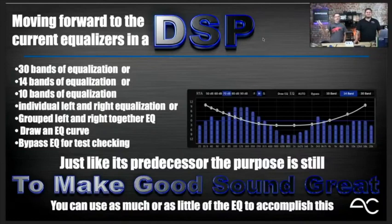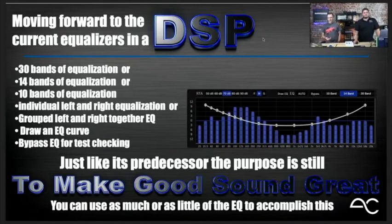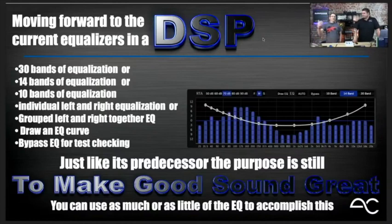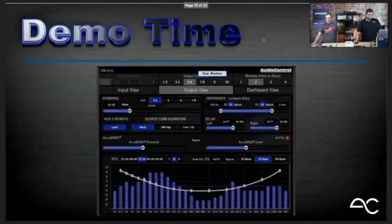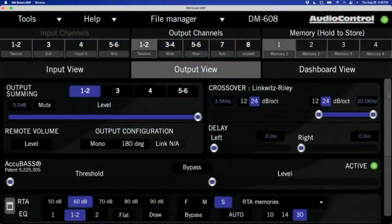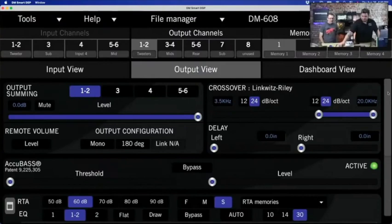You can draw an EQ curve — like the standard smiley face — and apply it to see how it sounds. You can also bypass the EQ for A/B test checks. After playing with the EQ for 20 minutes, being able to turn it off and on and go, 'Oh yeah, that's what I did' — just like its predecessor, the purpose is still to make good sound great. You can use as much or as little of the EQ to accomplish this.